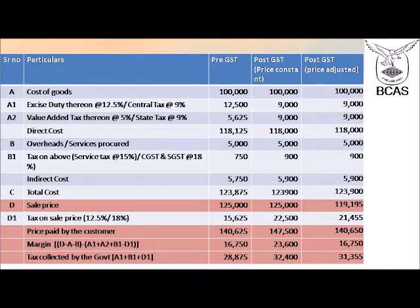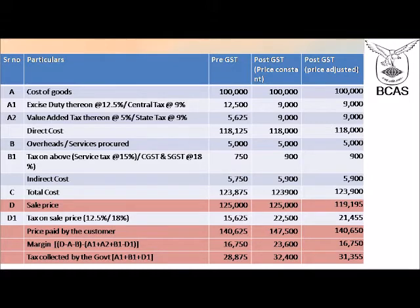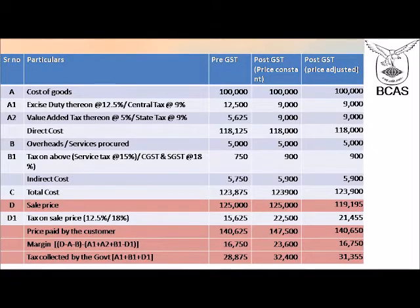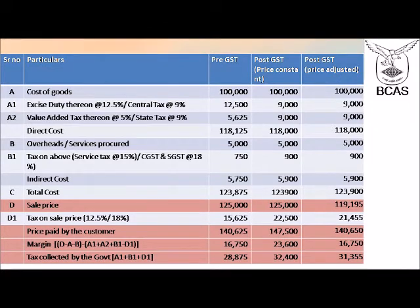Let us take an example of a supplier where the cost of goods to the supplier is 1 lakh rupees. At the time of purchase the supplier pays excise duty of approximately 12.5%, which is 12,500 rupees, plus he also pays VAT at the local level at 5%, which on 1 lakh plus 12,500 comes to 5,625. The total direct cost of the materials purchased will therefore be 1,18,125 rupees. If there were any services procured by the trader — say services worth 5,000 rupees — service tax thereon at 15% would be 750 rupees, making the indirect cost of services 5,750. The total cost of goods as well as services will be 1,18,125 plus 5,750, which comes to 1,23,875.